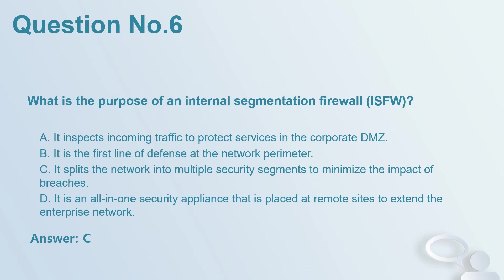Question number 6: What is the purpose of an internal segmentation firewall (ISFW)? A. It inspects incoming traffic to protect services in the corporate DMZ. B. It is the first line of defense at the network perimeter. C. It splits the network into multiple security segments to minimize the impact of breaches. D. It is an all-in-one security appliance that is placed at remote sites to extend the enterprise network. Answer: C.